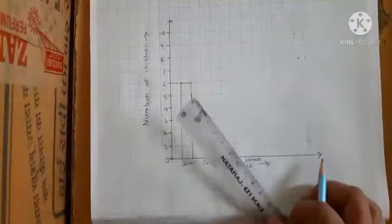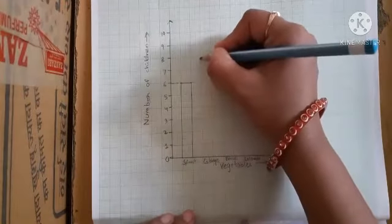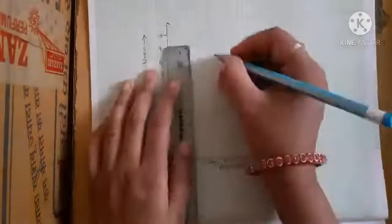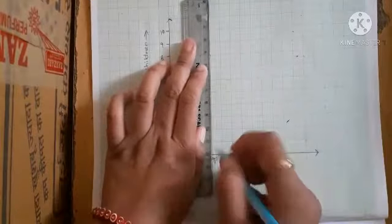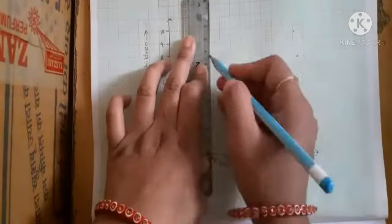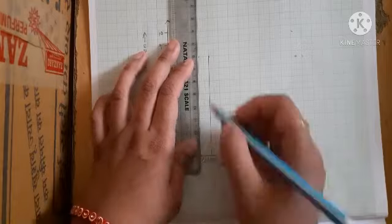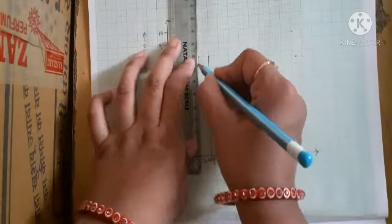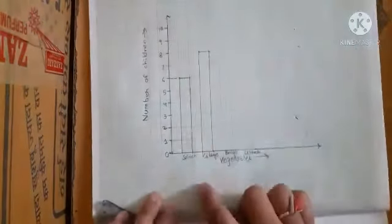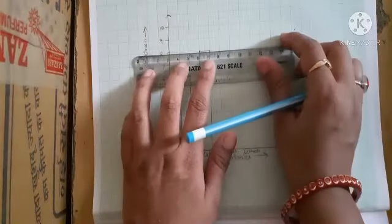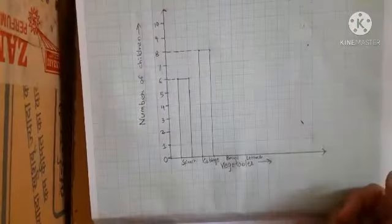Next one is cabbage, and its number is 8. We will make a box up to 8. Next we are going to join this point with this. Similarly this side. Done, and we are going to join these top points also. So done, we have made the bar for cabbage also, and here we will connect with a dotted line. This is also done.